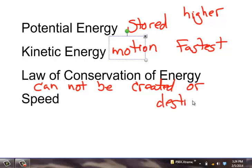Which means that you can't suddenly get potential energy or kinetic energy. You always have potential energy turning into kinetic energy, turning back into potential energy. And finally we have speed.